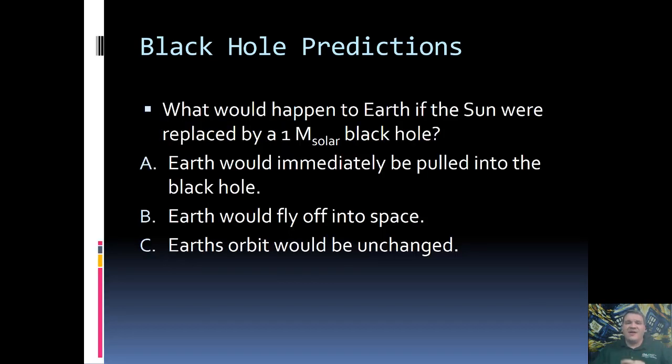Here is our second lecture quiz question. What would happen to the Earth if the sun were replaced by a one solar mass black hole? By magic, instead of the sun, we suddenly have a black hole of the exact same mass. A, Earth would immediately be pulled into the black hole. B, Earth would fly off into space. Or C, Earth's orbit would be unchanged. Go ahead and think about it and we'll discuss in just a bit.